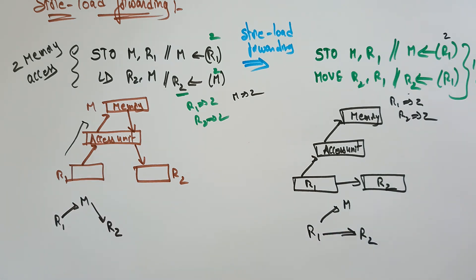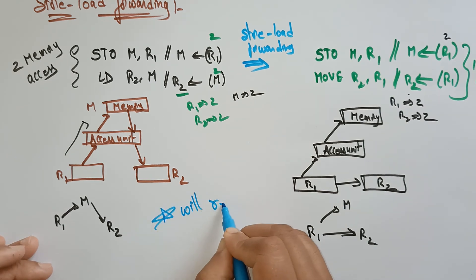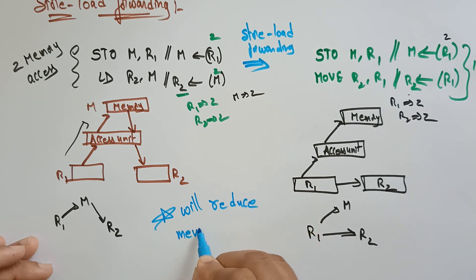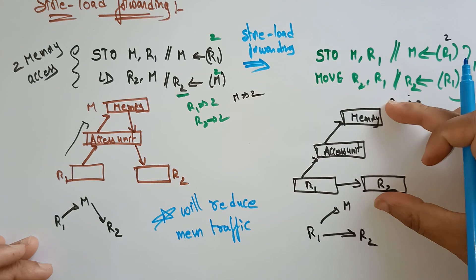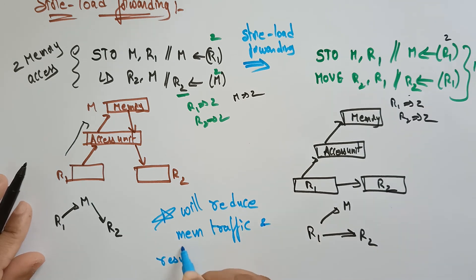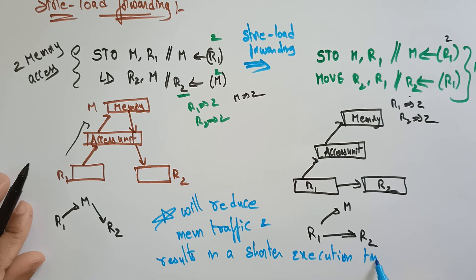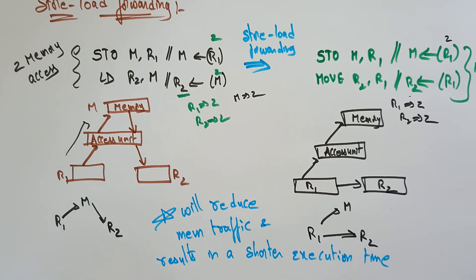The main advantage of this data forwarding is that it reduces memory traffic, since we are not accessing memory twice — only once. This results in a shorter execution time. We can execute the operation in less time because register transfer is faster compared to memory access. This is store-load forwarding. In the next video I'll explain load-load forwarding. Thank you.